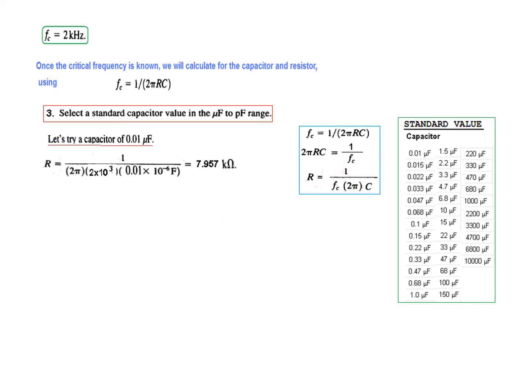Now from this formula, which is written here, this will be the formula for R. So we will plug in the values. Plugging in 2π, then the frequency 2 kHz, and then the capacitor 0.01 microfarad, we find the resistor to be 7.957 kΩ.